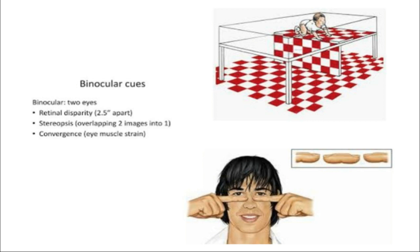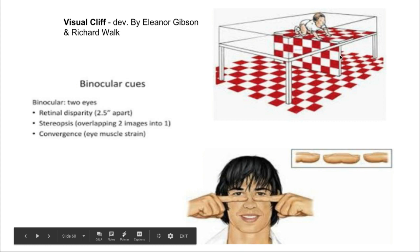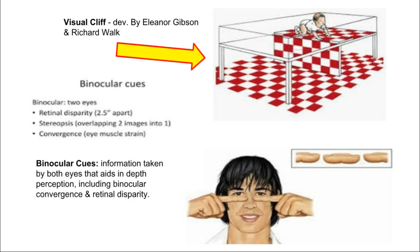Moving on to depth perception cues — we're going to talk about the visual cliff, developed by Eleanor Gibson and Richard Walk. This experiment tried to see whether a young child would perceive changes in patterns. No baby would be harmed — the tablecloth print makes it appear there's a cliff, testing whether the baby would stay safe on one side or, if it has no depth perception, simply cross the plexiglass without concern.